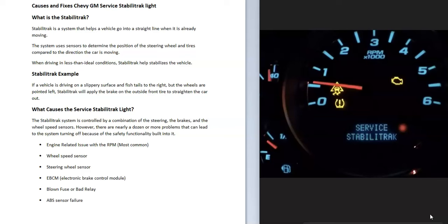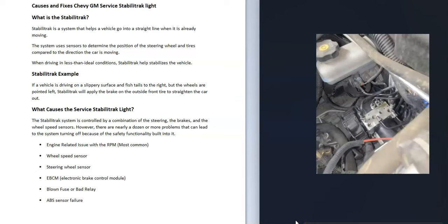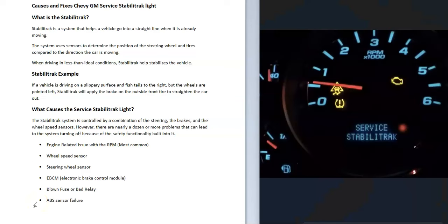What causes the stability track light to come on? There can be many things, and it breaks down into two categories: either an engine-related issue or something inside the stability track system itself. Components inside the stability track system include the wheel speed sensors, the steering wheel sensor, and the electronic brake control module. However, engine-related issues are the most common. If you're having a problem with the engine and the RPMs aren't consistent, the whole stability track system will shut down until it's fixed, because it needs consistent engine performance to work properly.